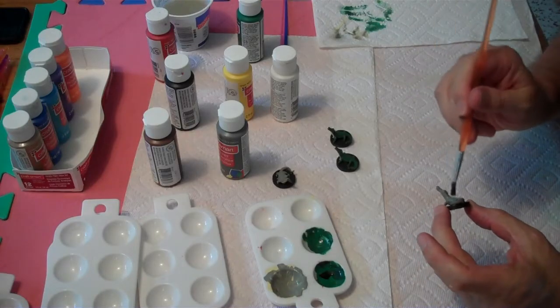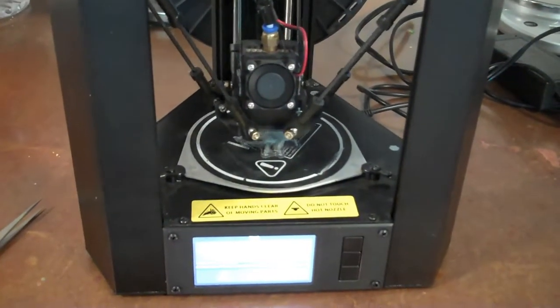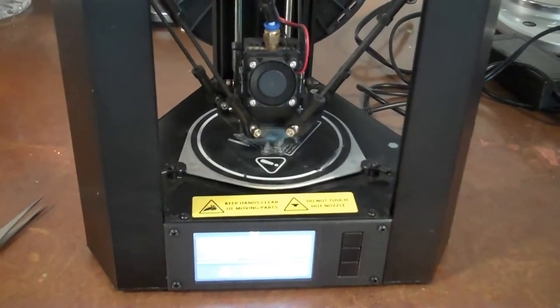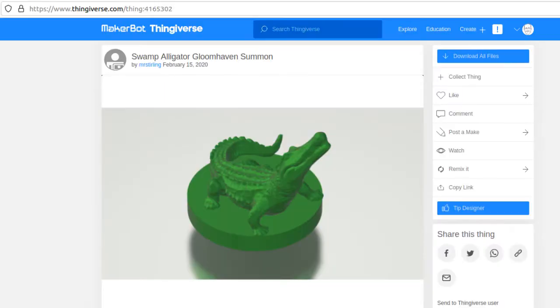In this video, I'll show you what I did and hopefully give you some useful ideas. I have a sub $200 Monoprice Mini Delta 3D printer, and I found a swamp alligator figure by Mr. Sterling on Thingiverse, its number 4165302.